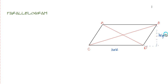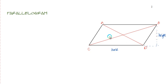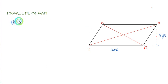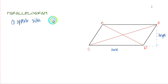Regardless of the orientation of the parallelogram, as long as it has two pairs of parallel sides it is called a parallelogram. Take note that a parallelogram has the following important properties. First, opposite sides are equal.